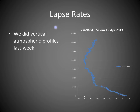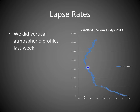Last week we did lapse rates and vertical atmospheric profiles. This is an example from Salem, April 15, 2013, showing temperature on the horizontal axis and altitude in meters. You can see it varies up to about 5,000 meters or so and then starts steepening and heating. We located the tropopause around here, and the heating is due to the presence of ozone in the stratosphere.